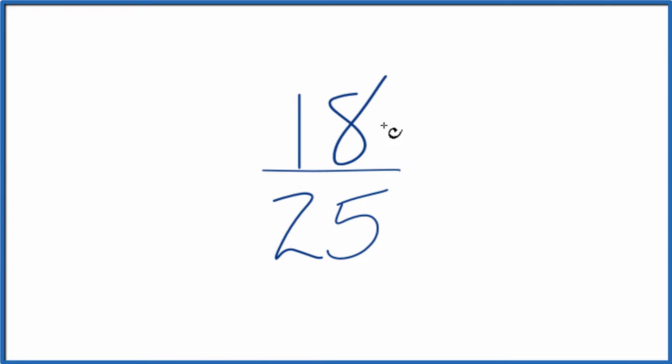All right, let's simplify the fraction 18/25. Here's how you do it. We want to find another fraction that's equivalent, has the same value as 18 over 25, that we've just simplified or reduced down to lowest terms.